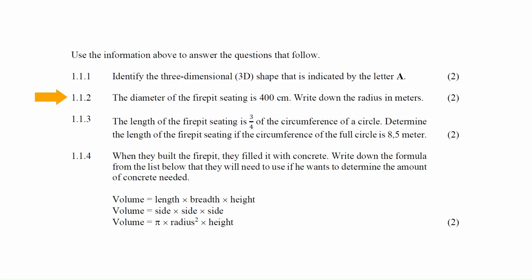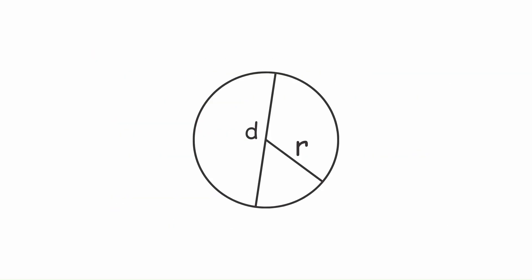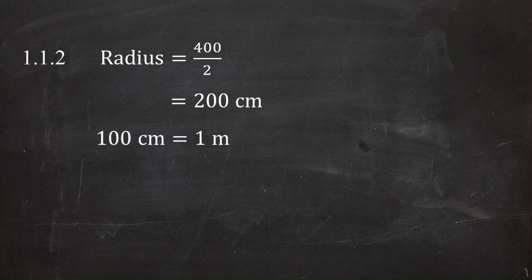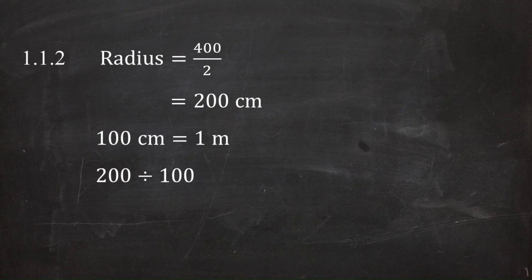In question 1.1.2 it is stated that the diameter of the fire pit seating is four hundred centimeters. You will have to write down the radius in meters. The radius of a circle is half the diameter, so the radius of the fire pit seating will be four hundred centimeters divided by two, which equals two hundred centimeters. Since there are one hundred centimeters in one meter, two hundred centimeters equals two hundred divided by one hundred, which equals two meters.